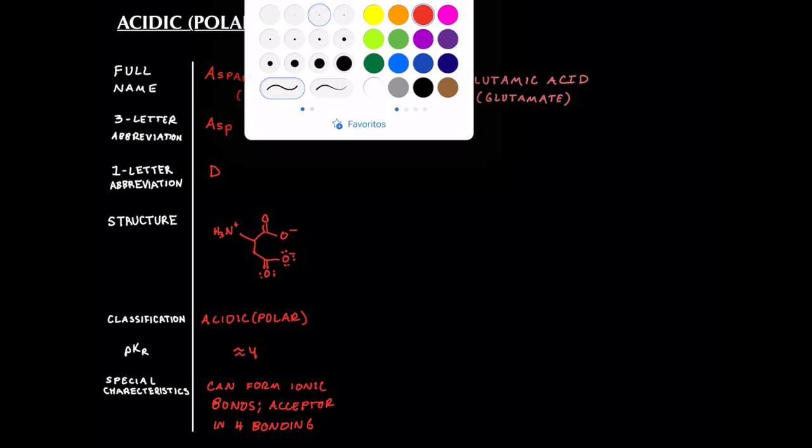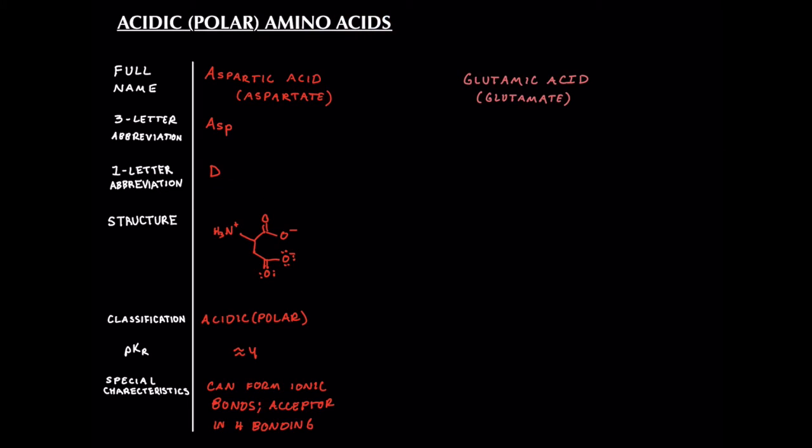Now that we've covered aspartate, let's take a look at glutamic acid or glutamate, which is going to be quite similar. So again, with our three letter abbreviation, it is quite intuitive. We have GLU. Now our one letter abbreviation for glutamic acid is not as intuitive. However, it is related to that of aspartic acid. So D and E are alphabetically together in the alphabet. So A, B, C, D, E.